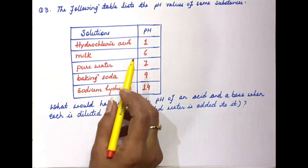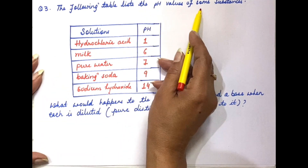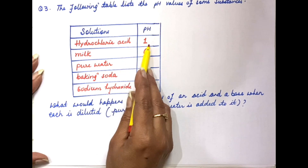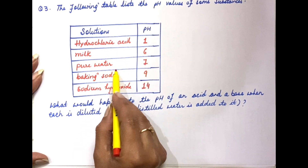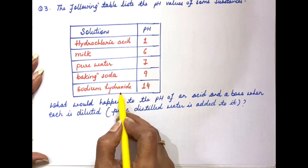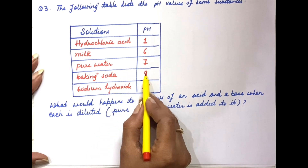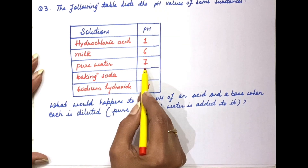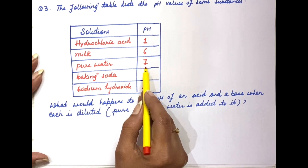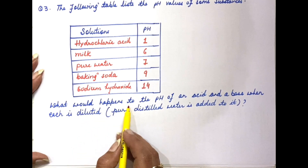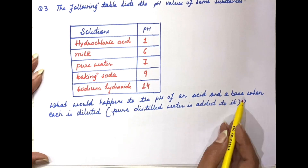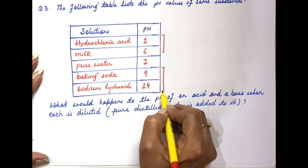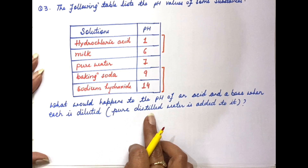Moving on to the third question. The following table lists the pH values of some substances: hydrochloric acid is pH 1, milk is 6, pure water is 7 (neutral), baking soda is 9, and sodium hydroxide is 14. The two acidic ones are HCl and milk, the two basic ones are baking soda and NaOH. Question है: what would happen to the pH of an acid and a base when each is diluted?